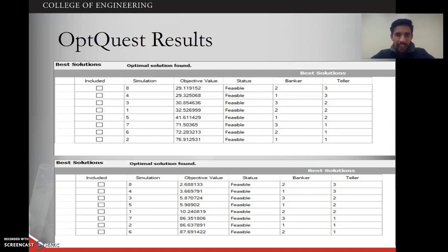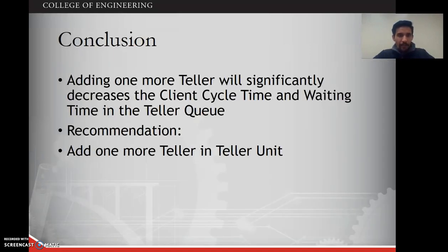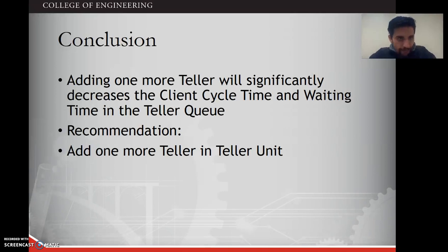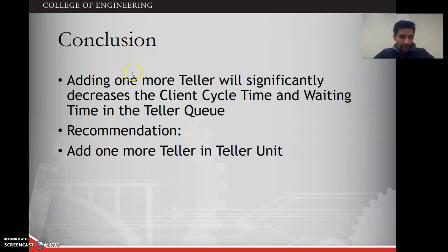From all three results — the output analyzer, process analyzer, and OptQuest — the findings support each other. We can conclude that adding one more teller will significantly decrease the waiting time in the teller queue as well as the overall cycle time. Therefore, we recommend adding one more teller to the teller unit. Thank you.